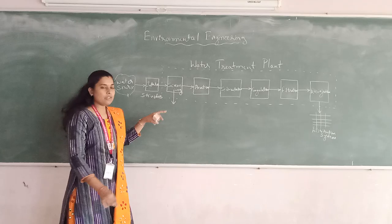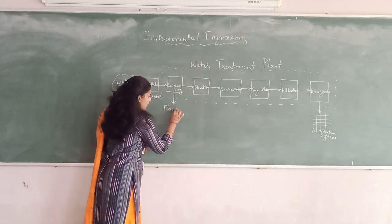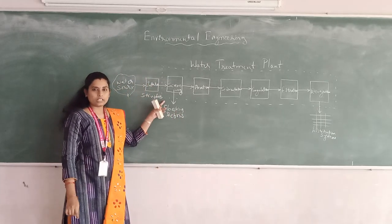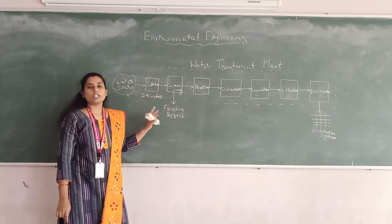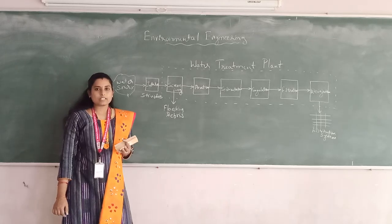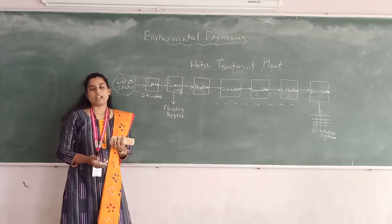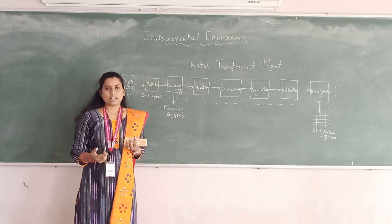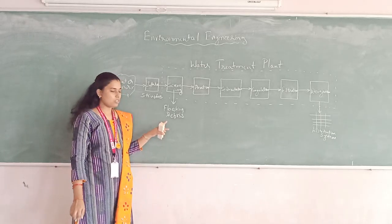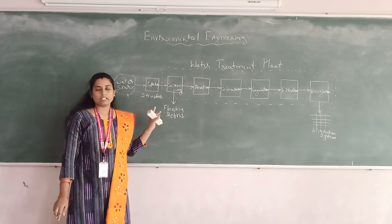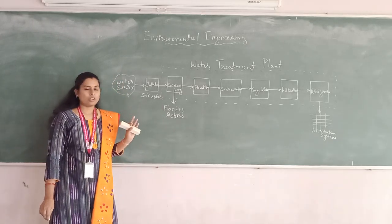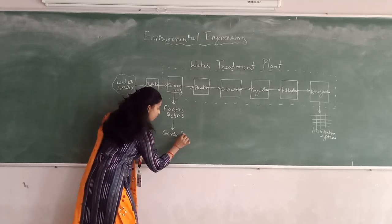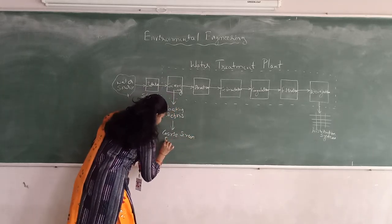In the water treatment plant, the first unit of treatment is screening. In the screening process, we are going to remove floating debris. Floating debris means any large floating matter — it can be paper, plastic, or large floating materials that are present. These are removed through the screening process in this first treatment unit.